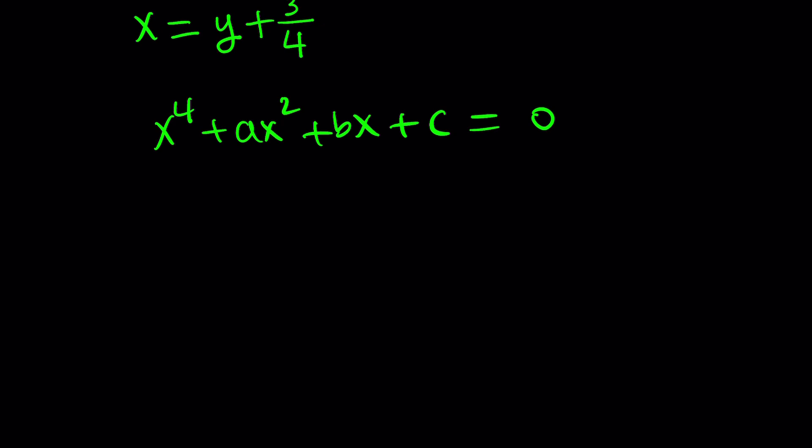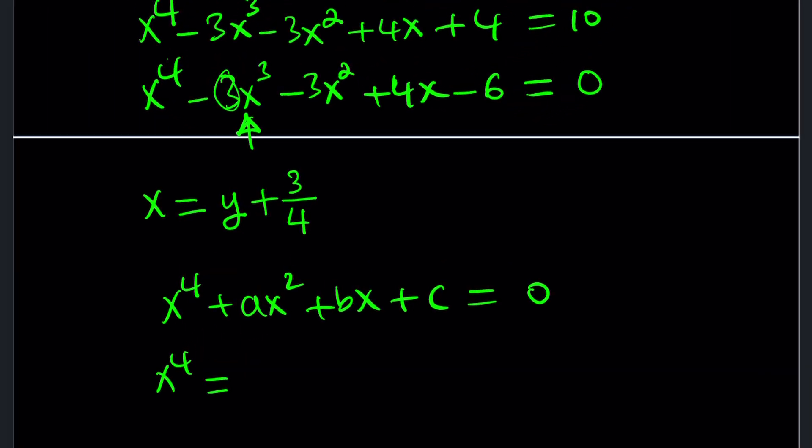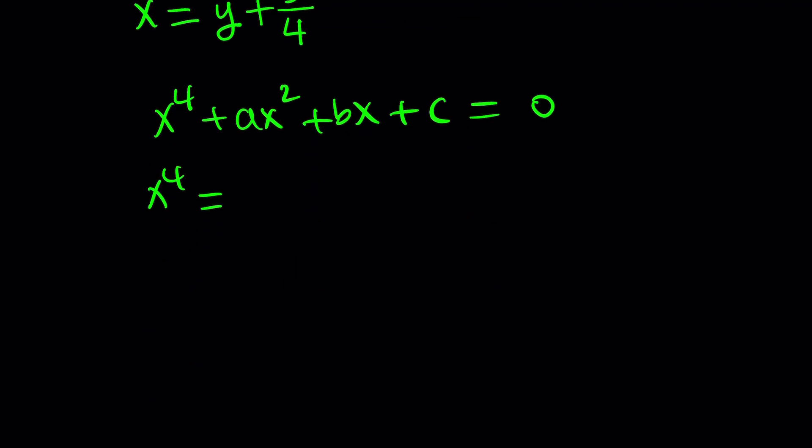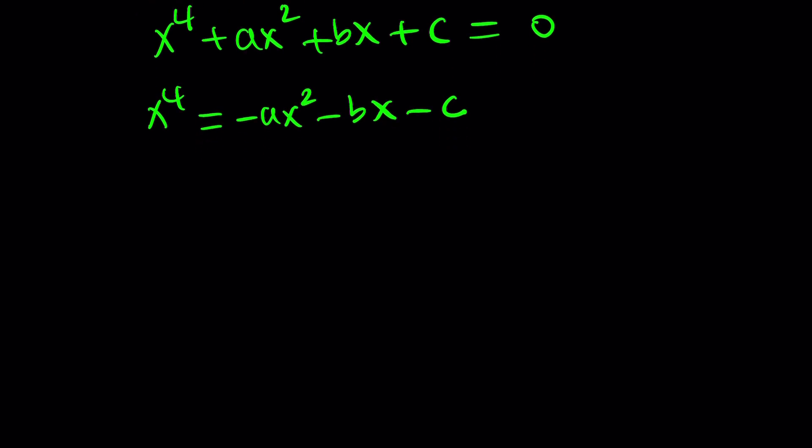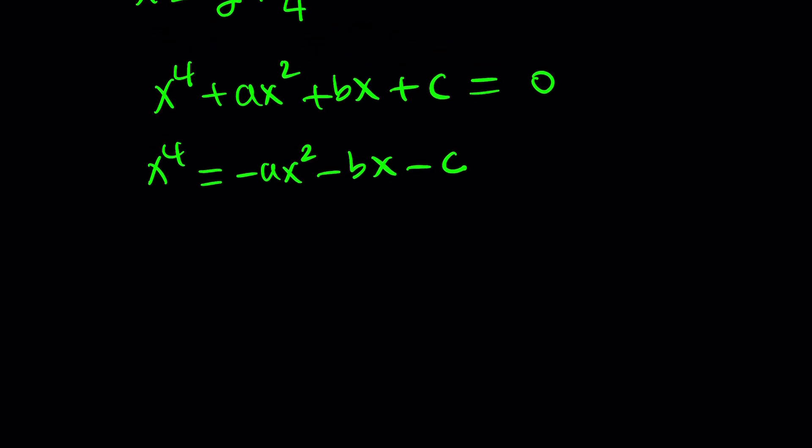Good question. Again, there are different ways, but one method uses, we basically throw everything on the other side. Leave the x to the fourth alone. And then we add something to both sides, trying to make the left-hand side a perfect square while keeping the right-hand side or making it also a perfect square. And yes, both can be done at the same time. That's the beauty of this method. I forgot what it's called. Descartes or some other guy. Hopefully someone can write it in the comment section down below.